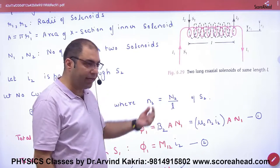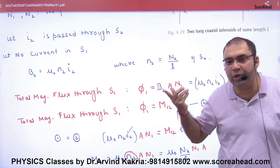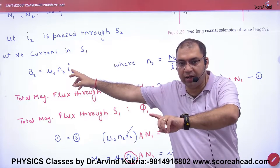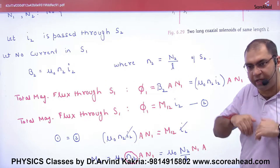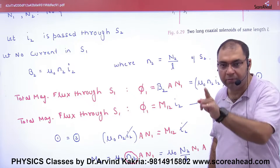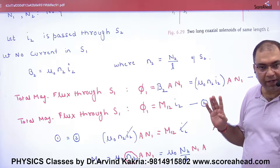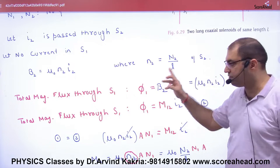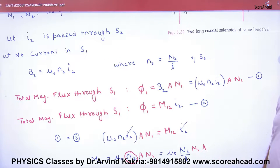The secondary S1 coil's flux will be B into area. But secondary has no B of its own because no current was passed through it. So it will use the primary coil's B, which is B2. It will use its own area and its own number of turns — only one thing it borrows from the neighbour, and that is B. So primary coil's B, secondary coil's flux, secondary's area, secondary's number of turns. Current goes into primary, B is of primary, flux of secondary is calculated, and in secondary's flux, B of primary is used. Putting B2's value in, we get the flux of the secondary.